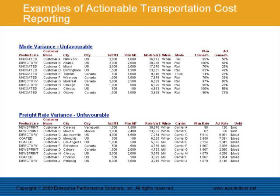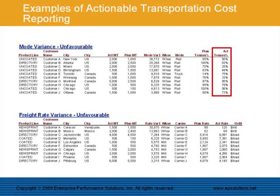The following is an example of actionable red flag reporting, identifying the top contributors to unfavorable mode and freight rate variances. Customer A, located in New York, is a top contributor to the unfavorable mode variance. Shipping to this customer resulted in a $36,600 cost overrun. The overrun was caused by a suboptimal use of the preferred mode, rail. As shown in the report, only 50% of the actual shipped volume was shipped by rail, versus 95% planned.